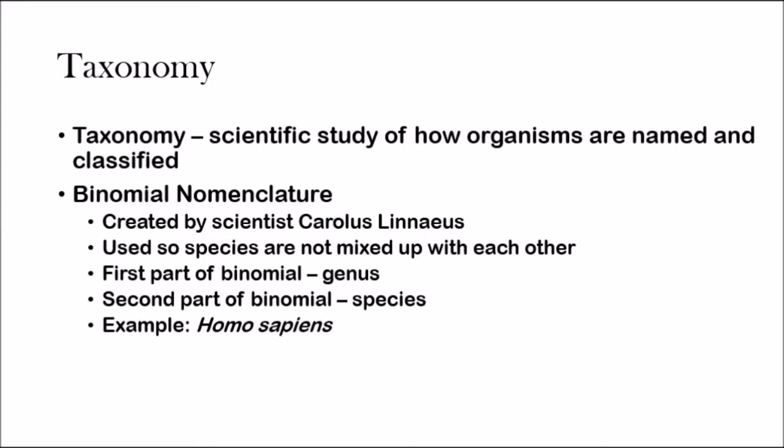You might be asking: why do we use binomial nomenclature to name species instead of just using common names? Think about the elephant. You probably know what an elephant is, but there are different types of elephants — there's an African elephant and an Indian elephant, and they're very different from each other. Because of that, scientists have this way of naming and classifying species so they are not mixed up.